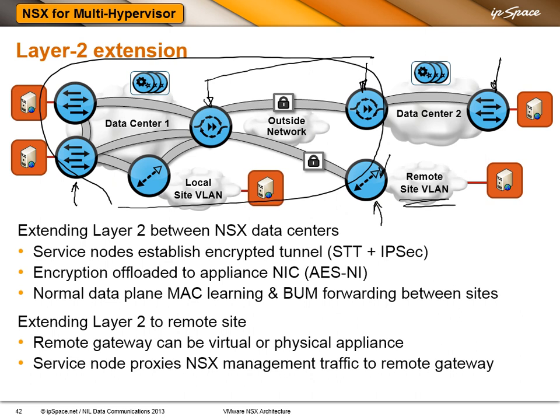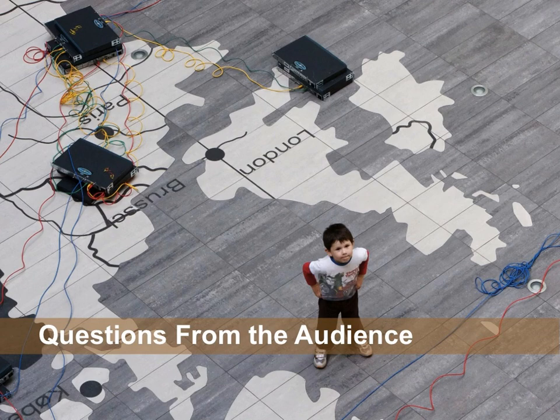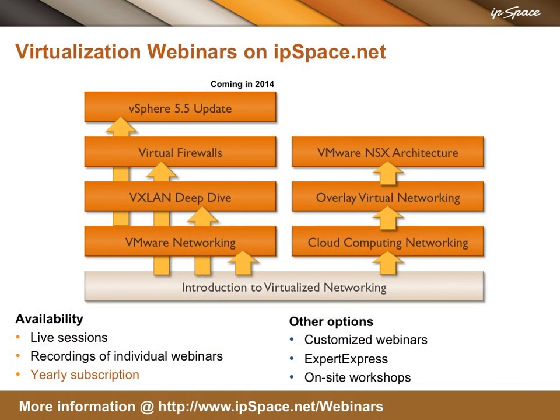When we do distributed routing, of course we have to decrement TTL to prevent forwarding loops. What's the best practice for a DCI solution — layer 2 or layer 3? You probably know the answer: layer 3 is always better, but with NSX you can get both. For other virtual networking, data center, and cloud networking webinars, visit ipspace.net.